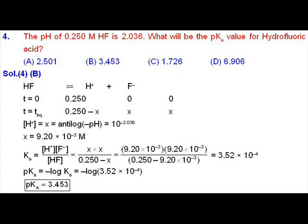We are going to discuss question number 4 from MTP4. We are given that the pH of 0.25 molar HF is 2.036, and we have to calculate the pKa value for the given acid.